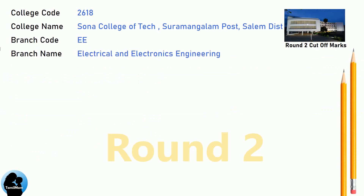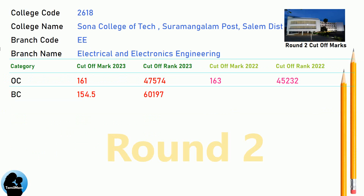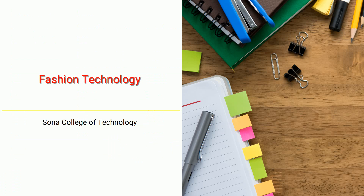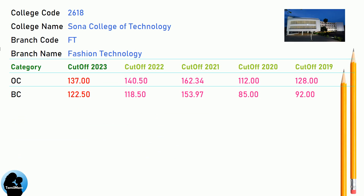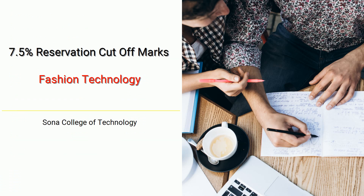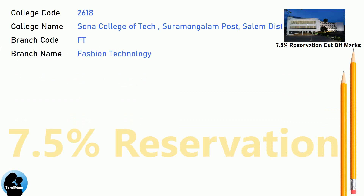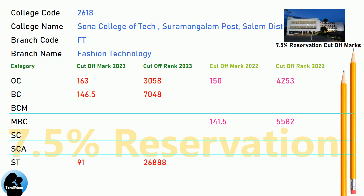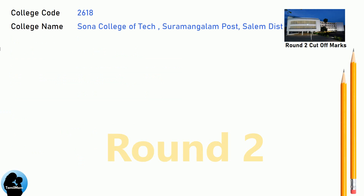DNA cut-off for Sona College of Technology in Fashion Technology. DNA 7.5 Reservation cut-off for Sona College of Technology in Fashion Technology. DNA Round 2 cut-off for Sona College of Technology in Fashion Technology.